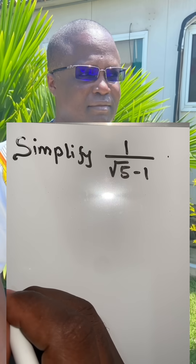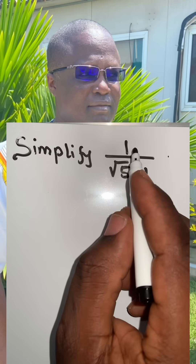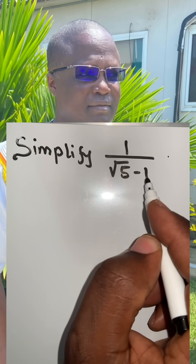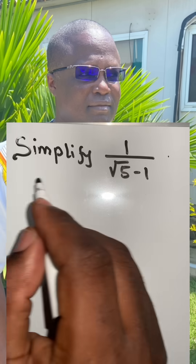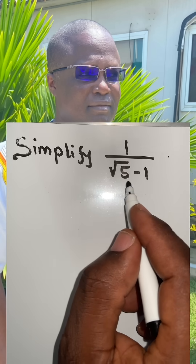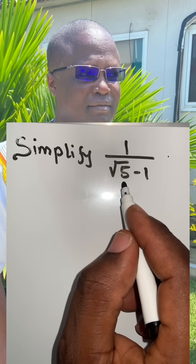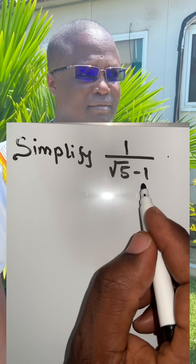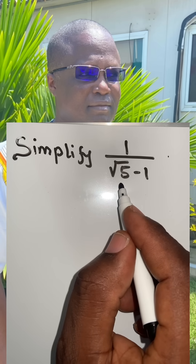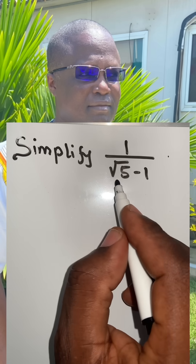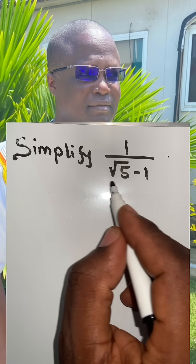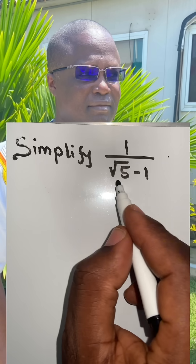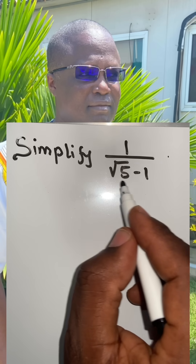We have been asked to simplify this expression: 1 over the square root of 5 minus 1. You may ask, is the expression not already in the simplest form? The answer is no. Because of the square root sign — the radical symbol — that is in the denominator.